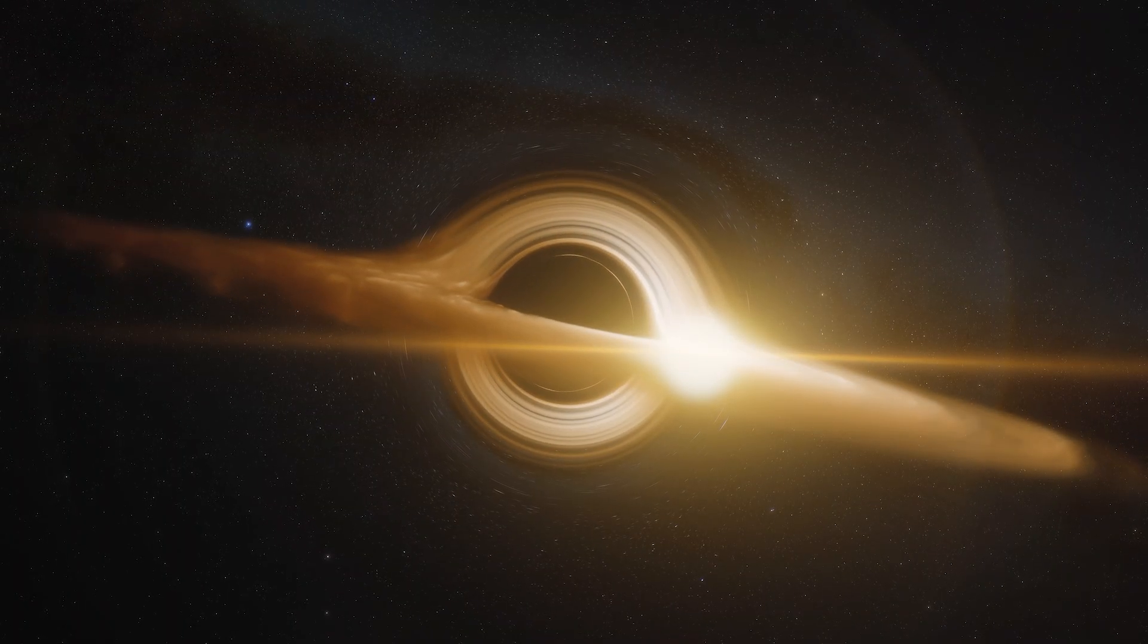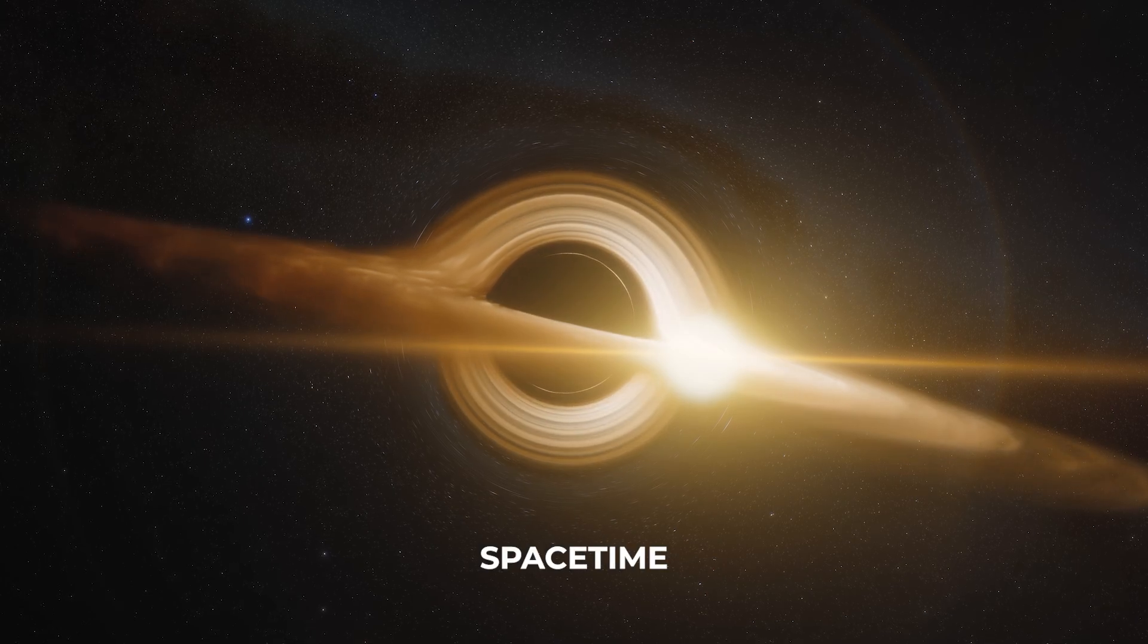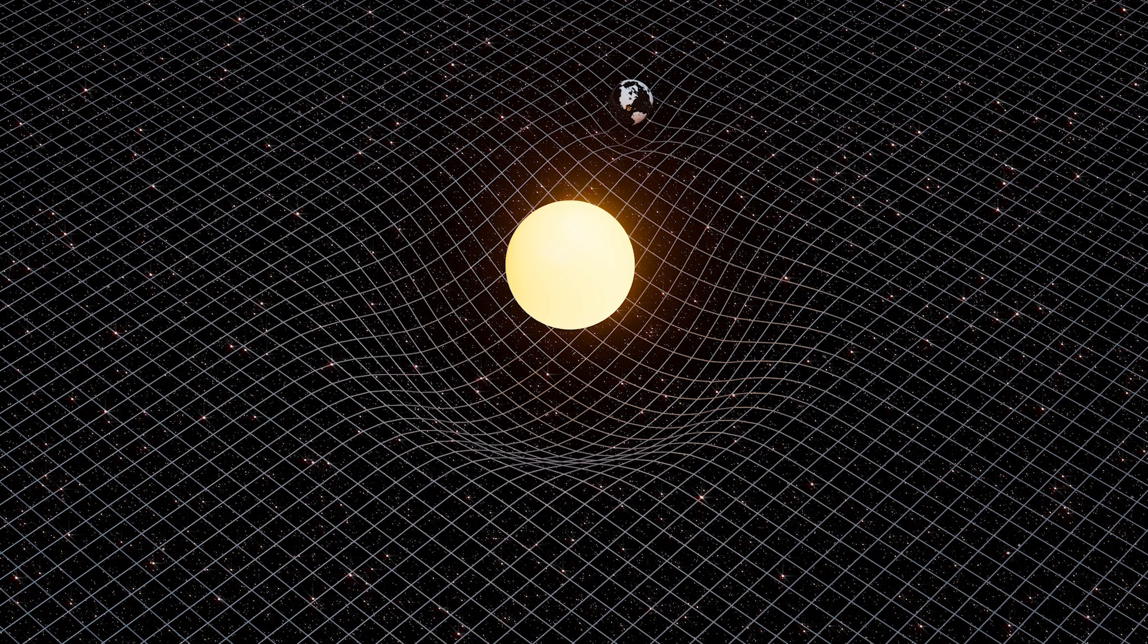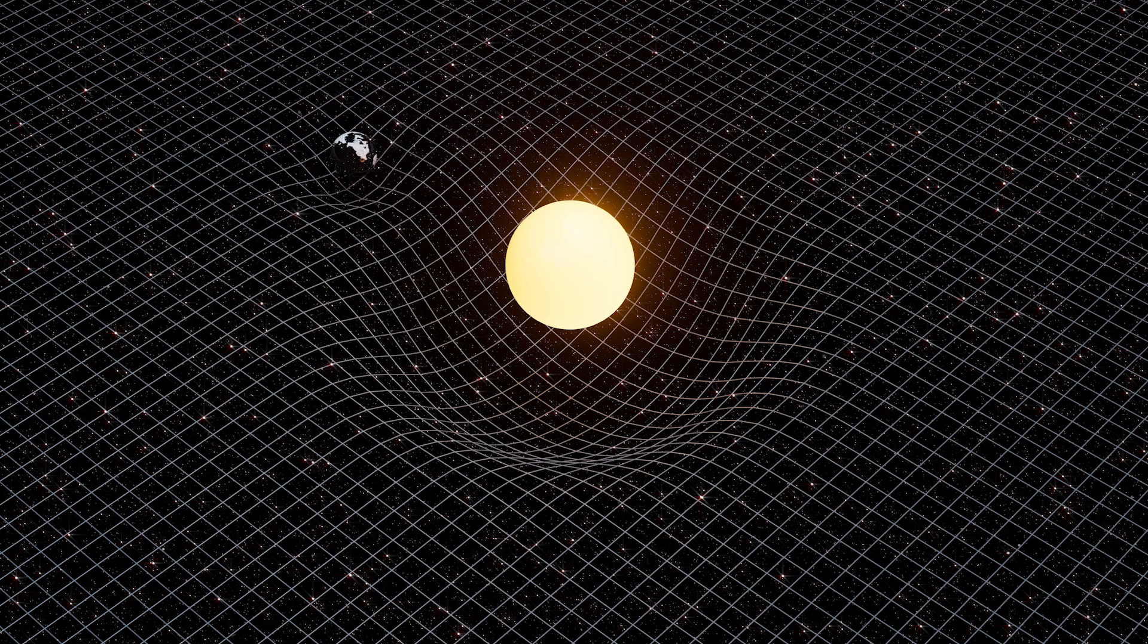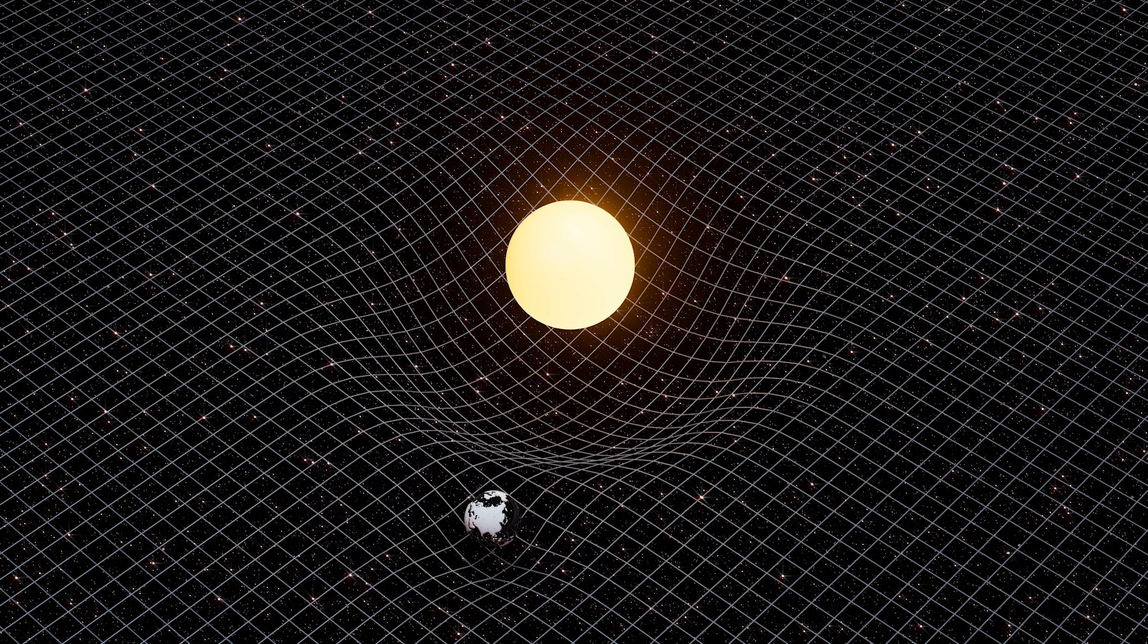So what's really causing time to slow down near a black hole? It all comes down to something called spacetime. Picture spacetime as a giant, stretchy fabric that covers the entire universe. Massive objects like stars or planets sit on this fabric and create dents in it,